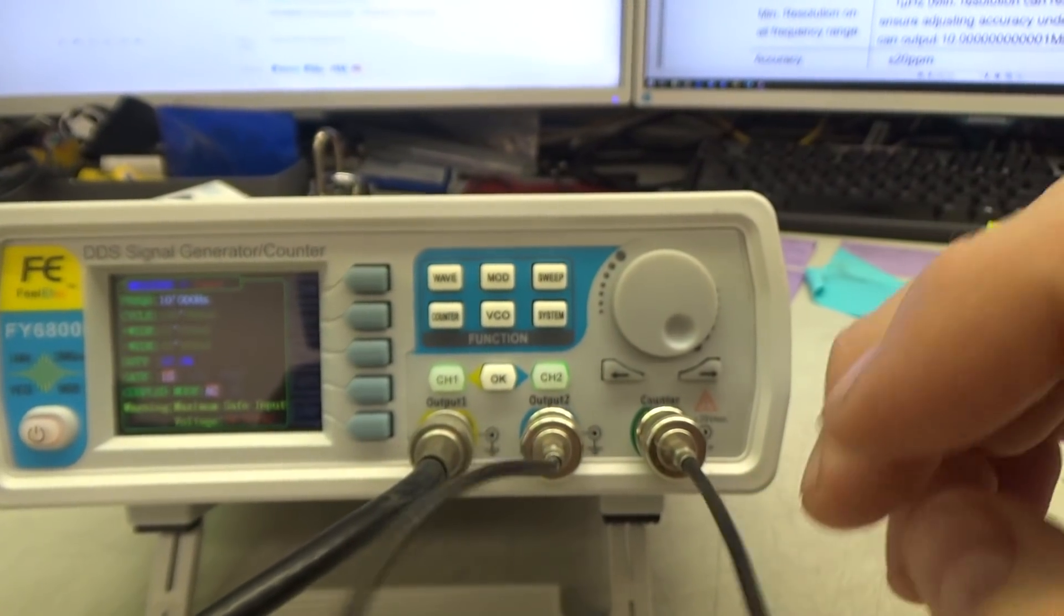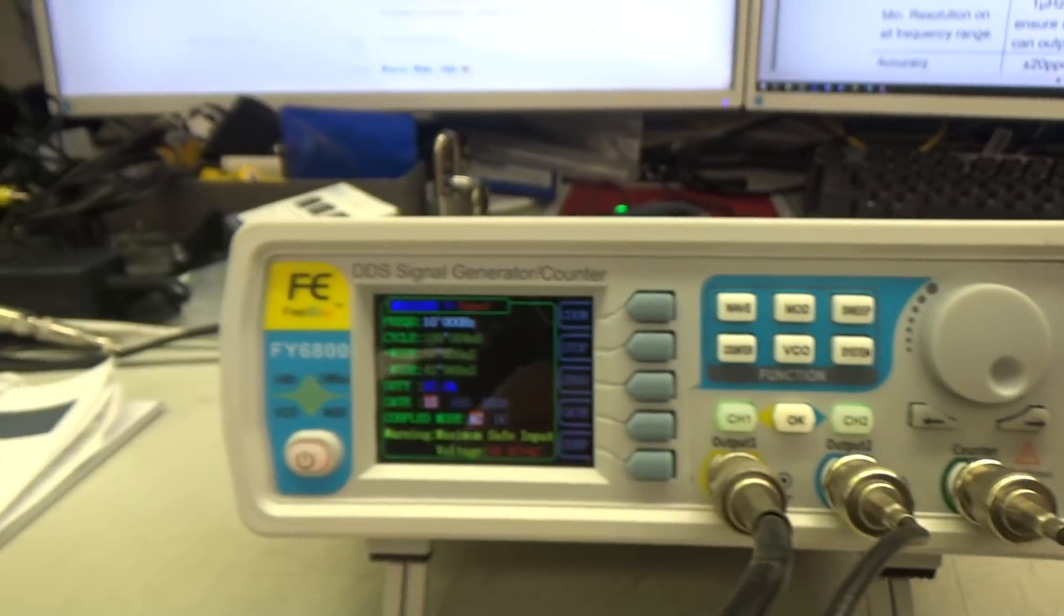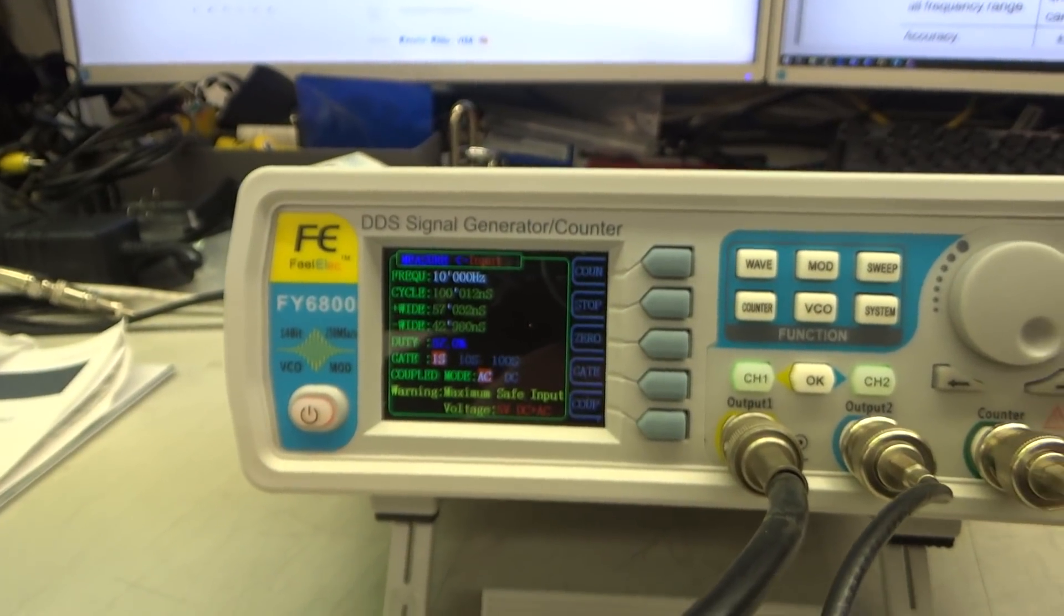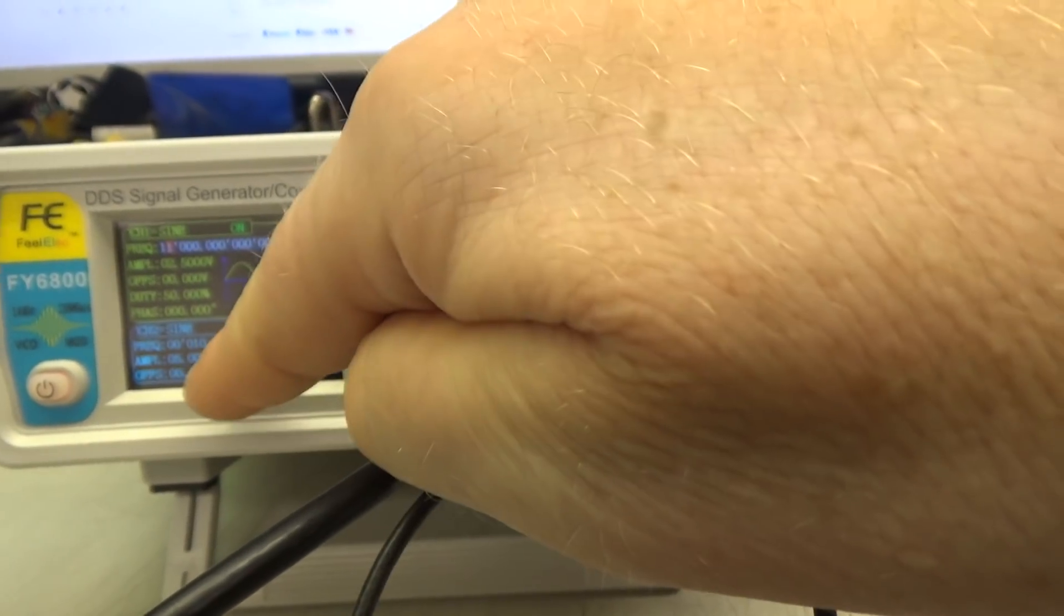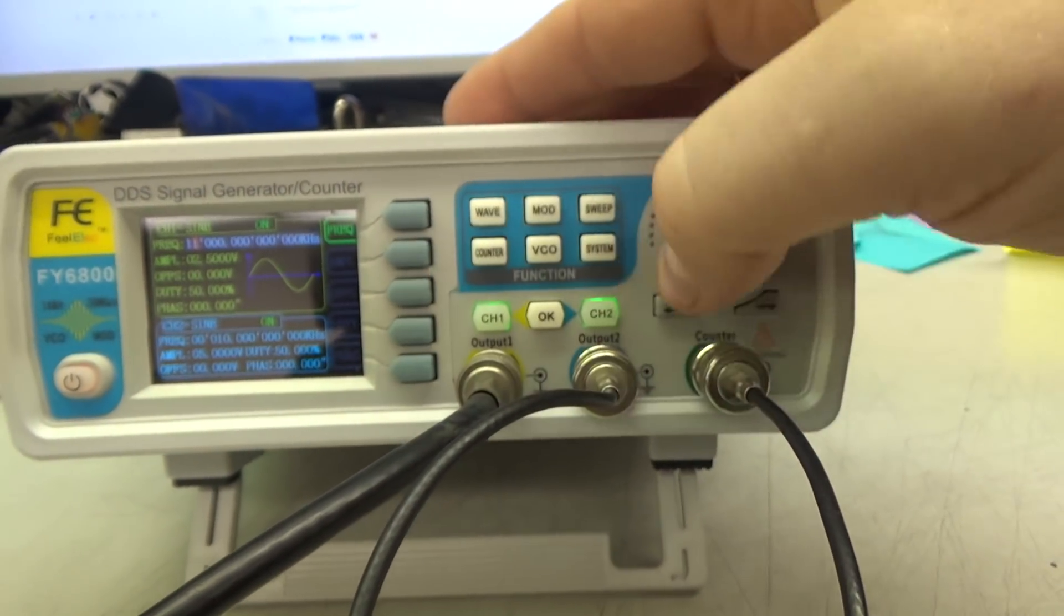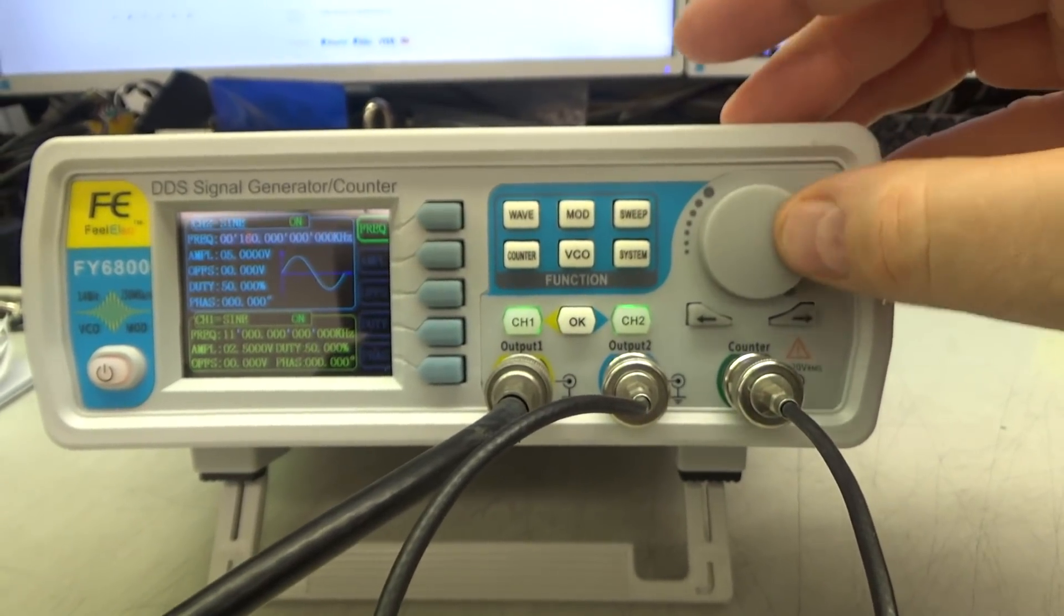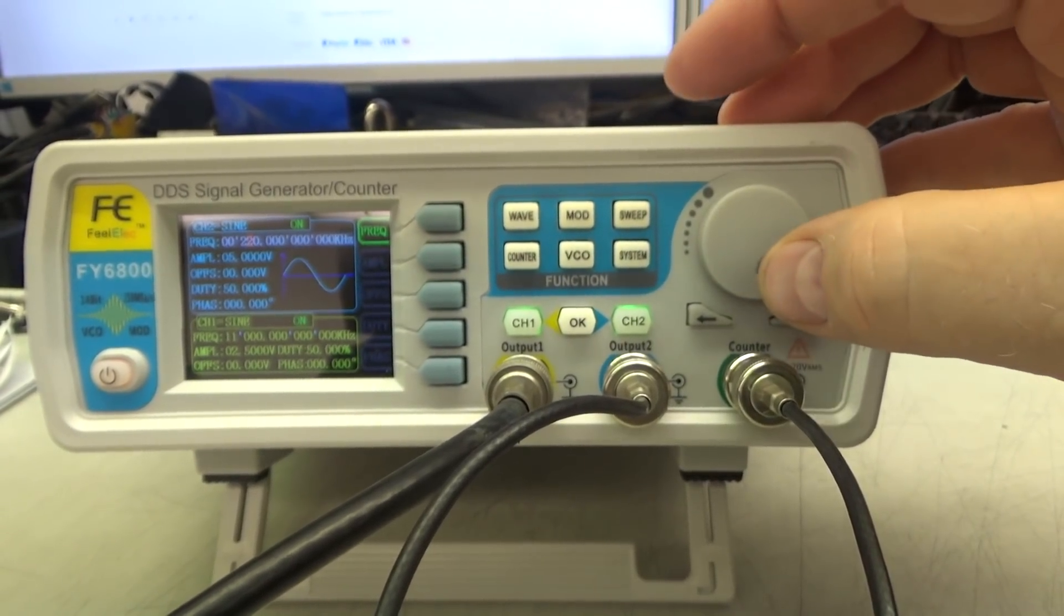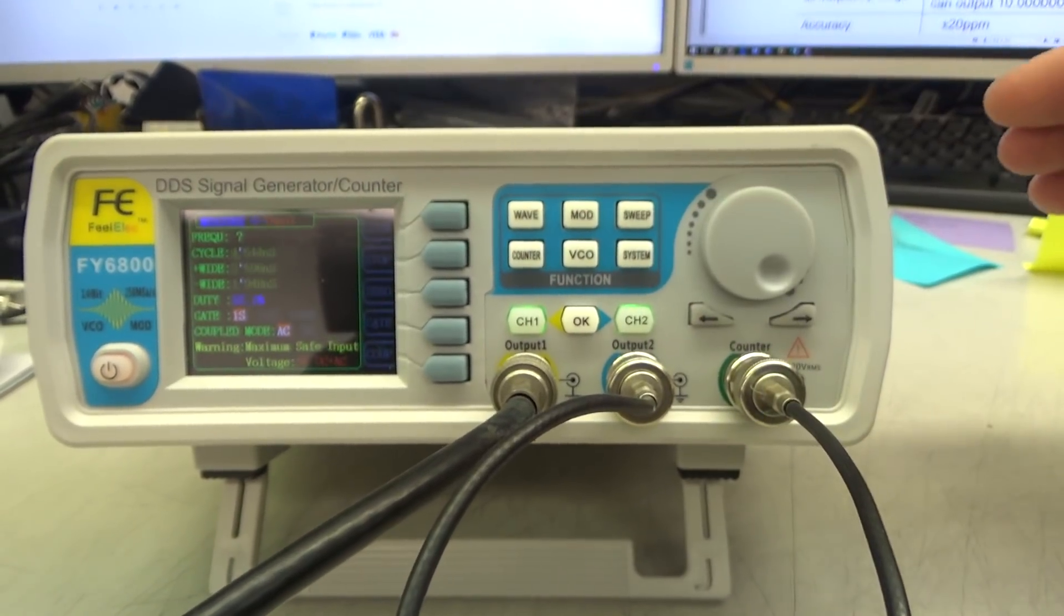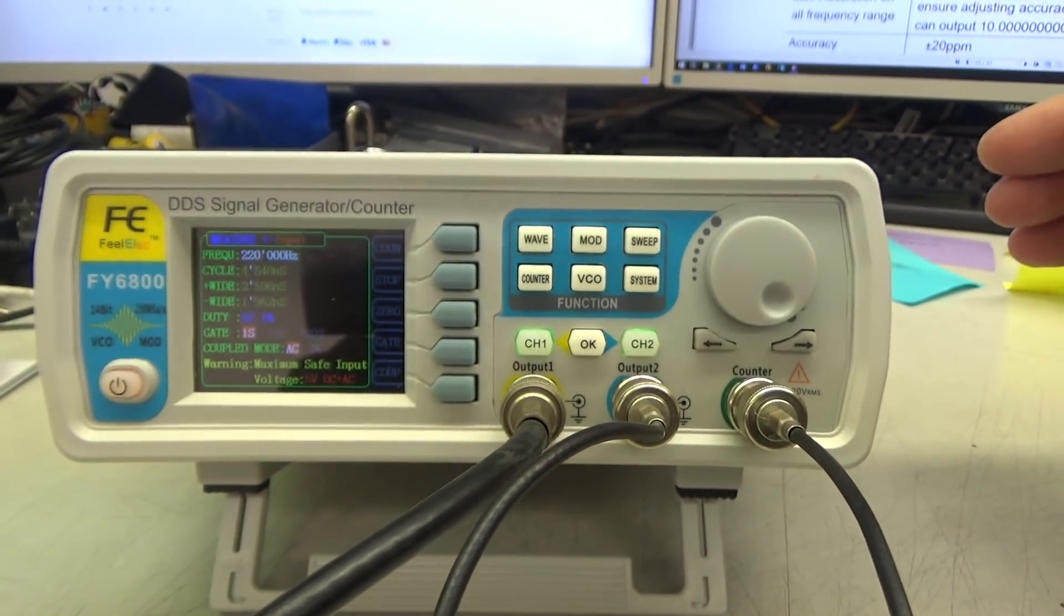Here is channel 2 being fed back into the counter. As you can see it is measuring 10 kHz which is what is being sent out of that channel. I made channel 2 primary and we shift the frequency up to 210 kHz. Back here to counter. And there we are.